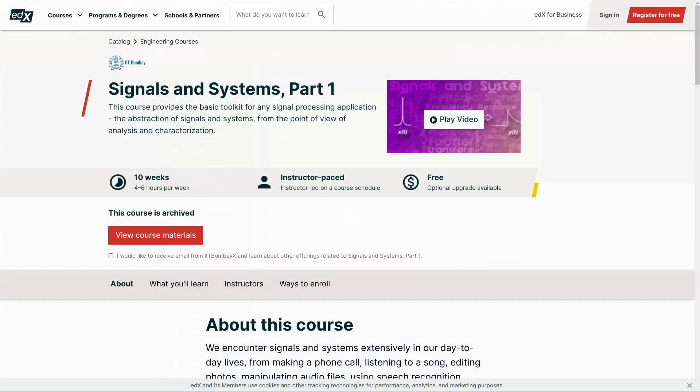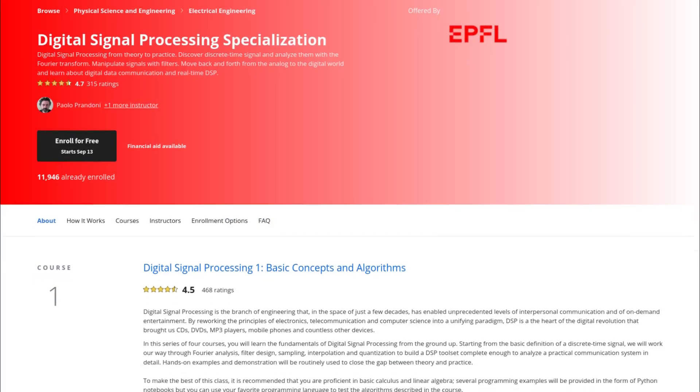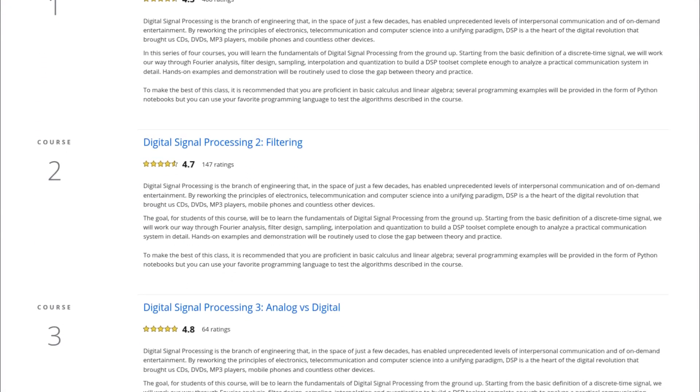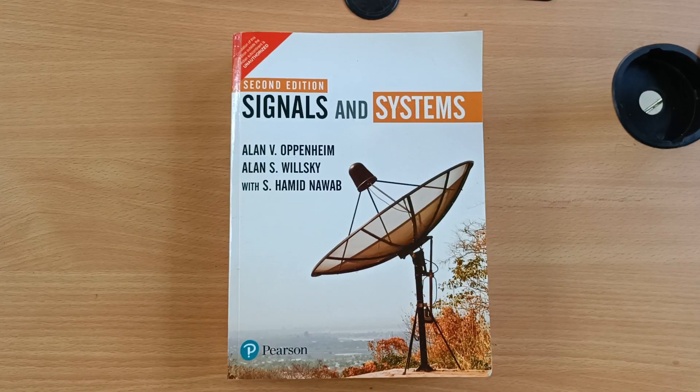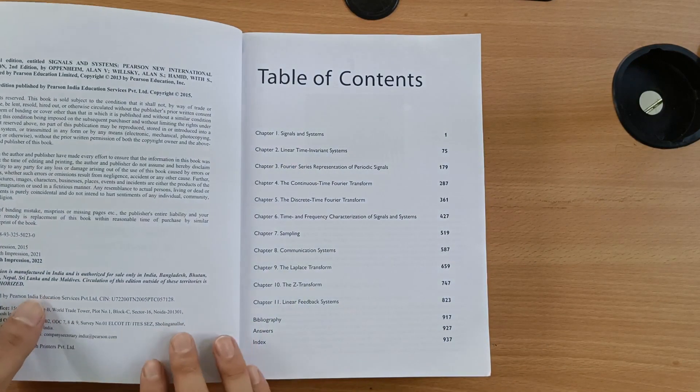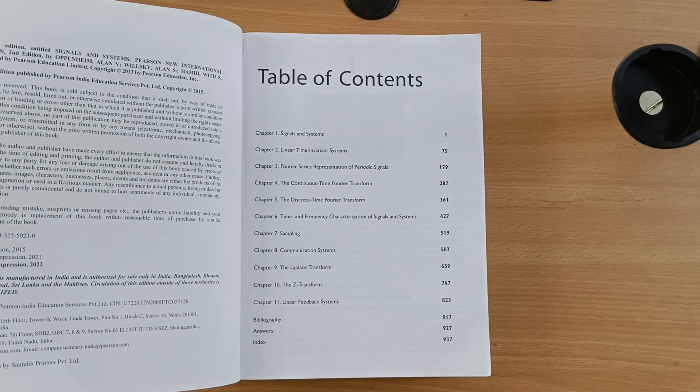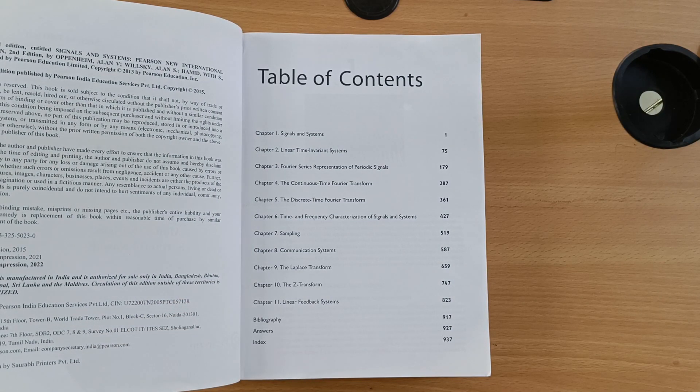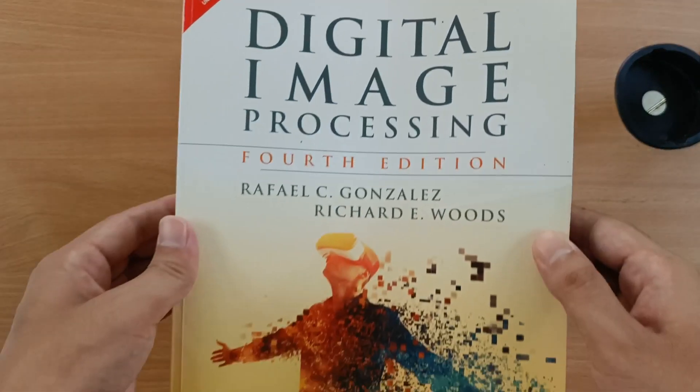The course will be signals and systems part 1 offered by IIT Bombay on edX and as I move on to discrete signals I may study the digital signal processing specialization by EPFL. The book that I will be following is aptly titled Signals and Systems by Alan V Oppenheim. It is unlikely that I will finish this book in its entirety in just one summer but I will try to cover as much as I can and once I have covered this I will then consider myself ready to deal with this beast.